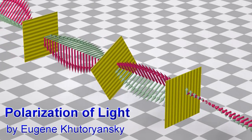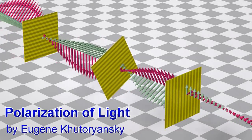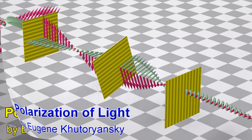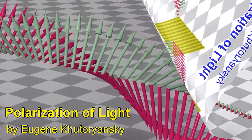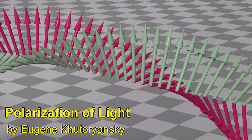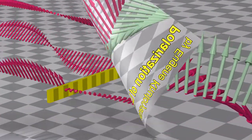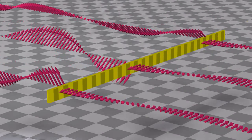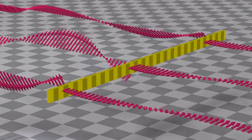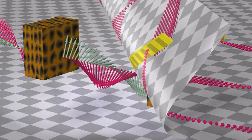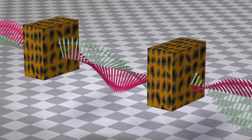The polarization of light plays a critical role in much of our technology, and it plays a very important role in experiments in quantum mechanics which challenge our assumptions about the nature of reality.